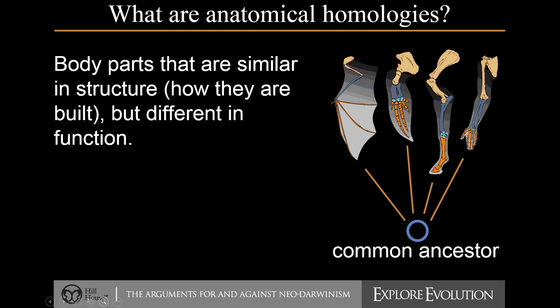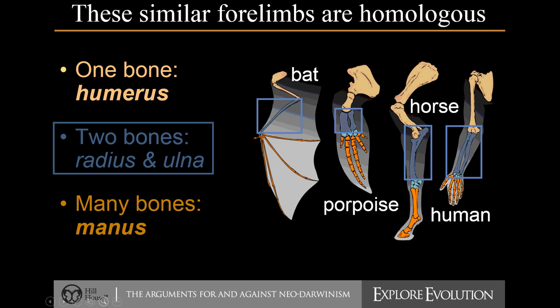So what is an anatomical homology? Essentially, when we look at the anatomy or structure of the bodies of different organisms, sometimes we see that the way they're built structurally is similar, even though they carry out different functions. One common example often given is the limb of a vertebrate.